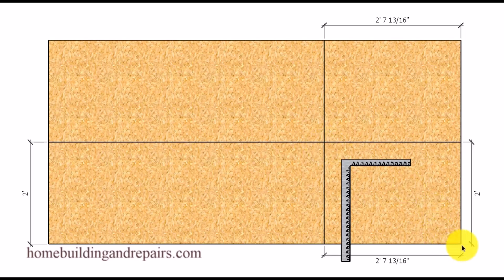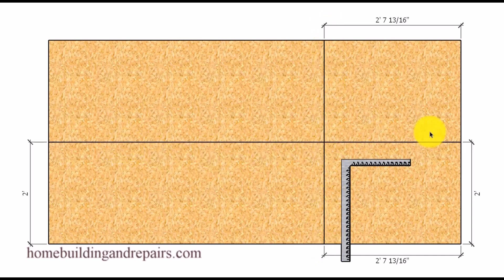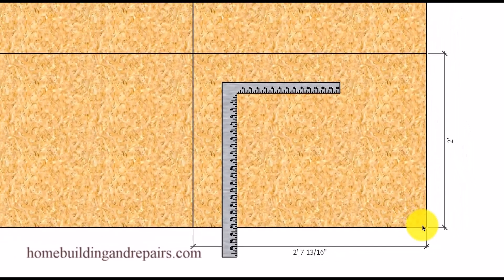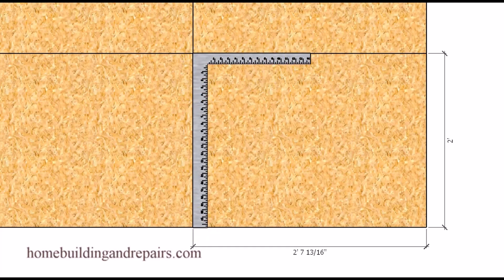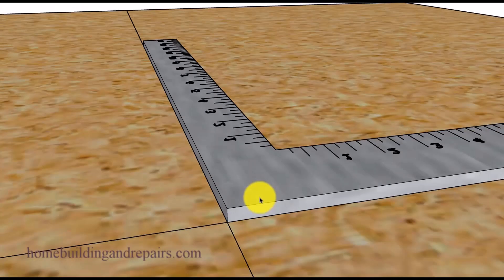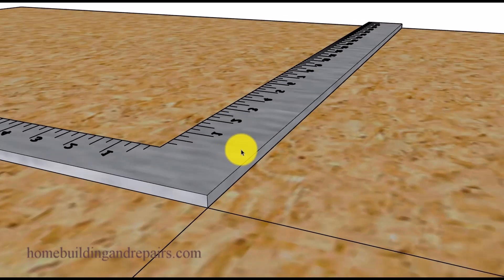You can do that by simply measuring in at least two feet, or the length of the framing square, on either side, and then measuring over two or three feet to create a straight line that is perpendicular to the other line. Then simply line the square up with the edges, and line it up with the lines you have created on the plywood and examine these lines closely, because if it's off just a little bit then you might have a problem.